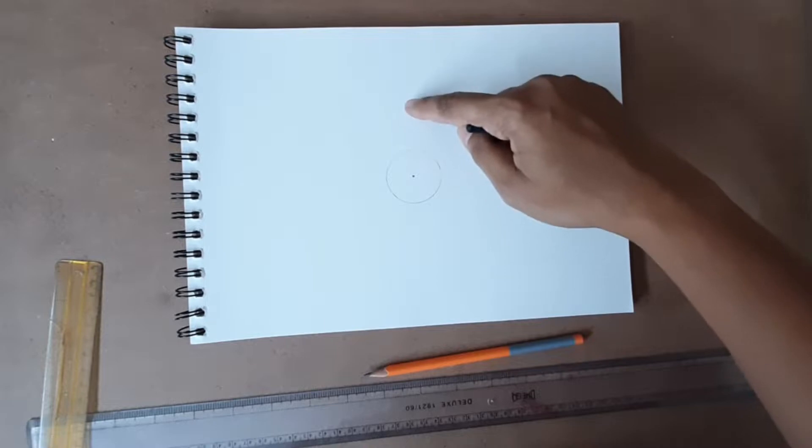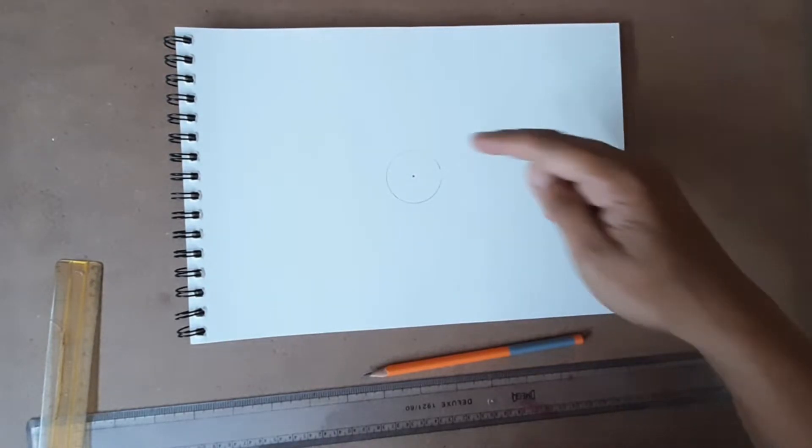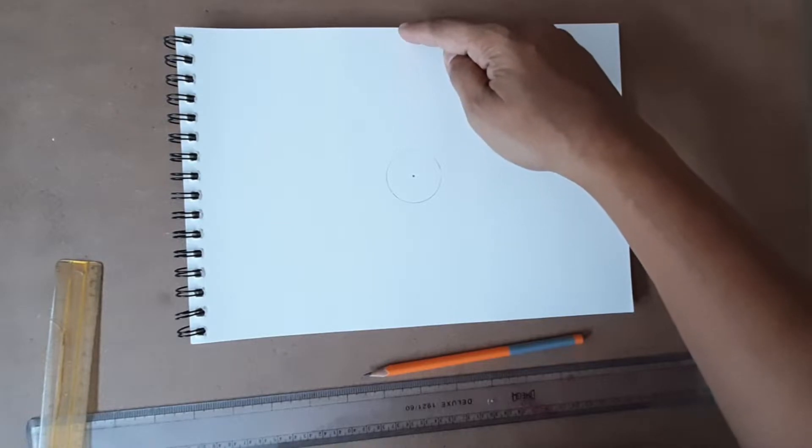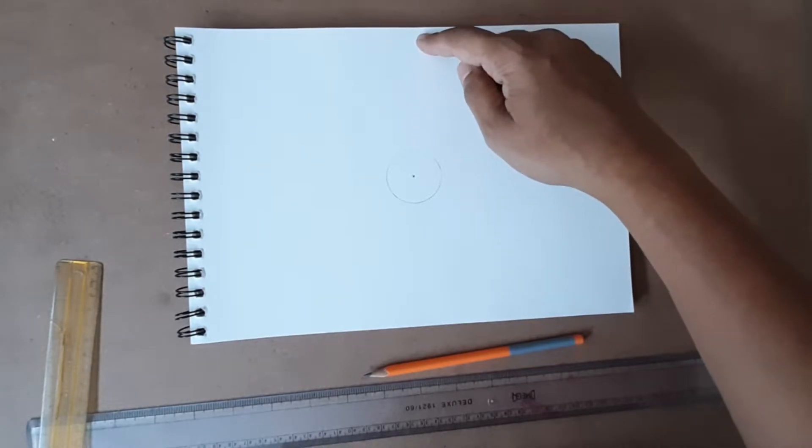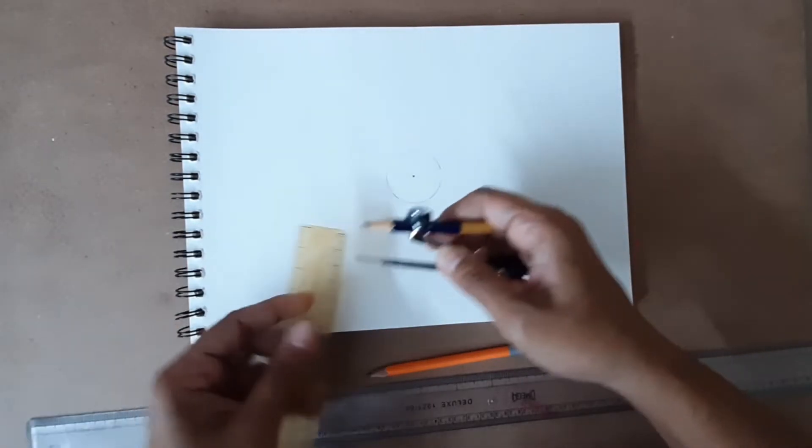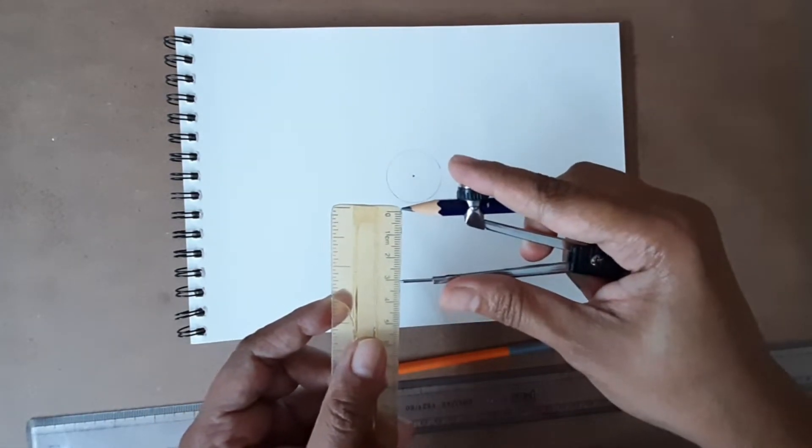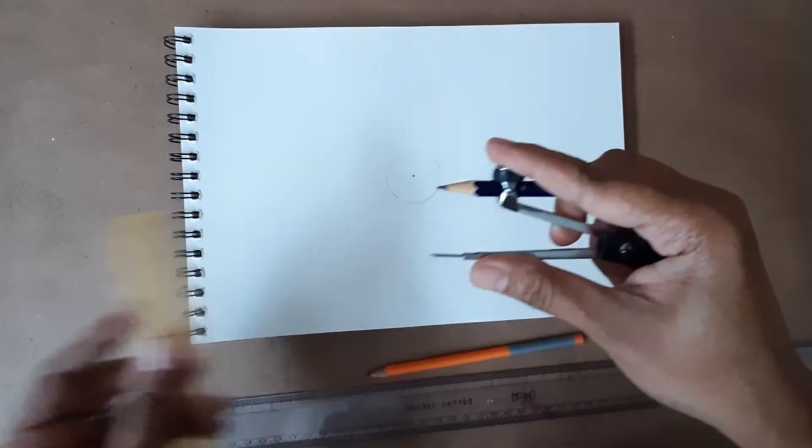We need six more circles: three, four, five, six, seven, and eight. That's how we are going to draw them. Every time I'm just going to measure each one.